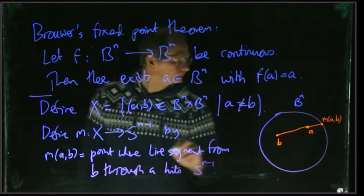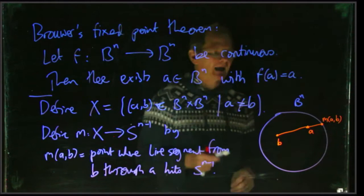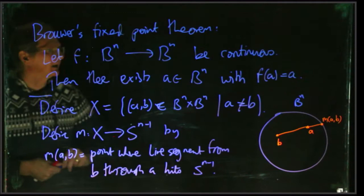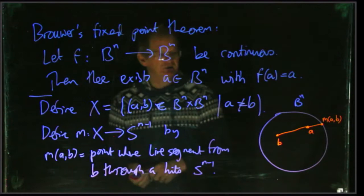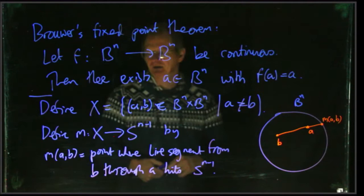So notice it's important here that our pair (a,b) is in X, that a and b are different. If a and b were the same, then we wouldn't know which direction to draw the line in, but because b is different from a, we do know which direction, we can draw this line, and it will eventually escape from the ball at some point m(a,b). That's our definition of m.